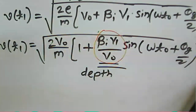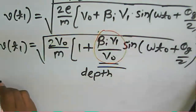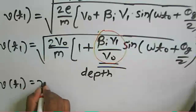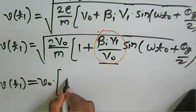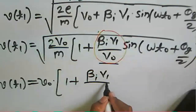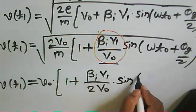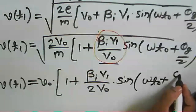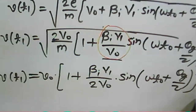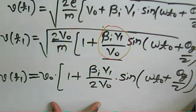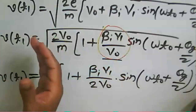Applying the binomial expansion to the above equation, we get: v(t1) = v0 * [1 + (beta_i * v1)/(2*v0) * sine(omega*t0 + theta_g/2)]. This equation represents the velocity modulation of the electron beam after passing through the buncher gap at time t1.